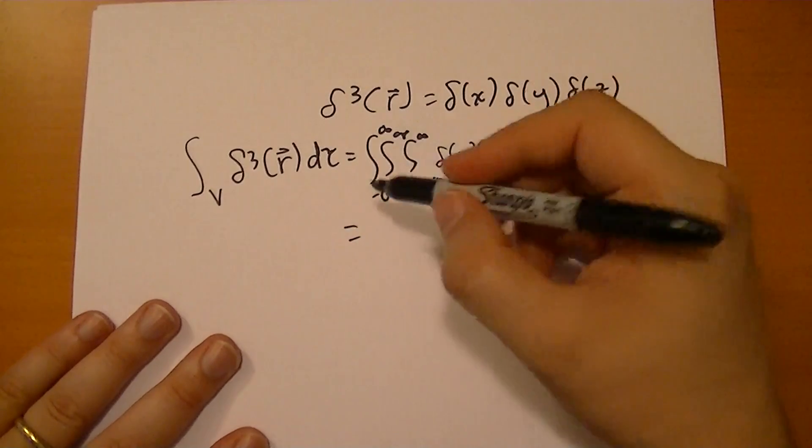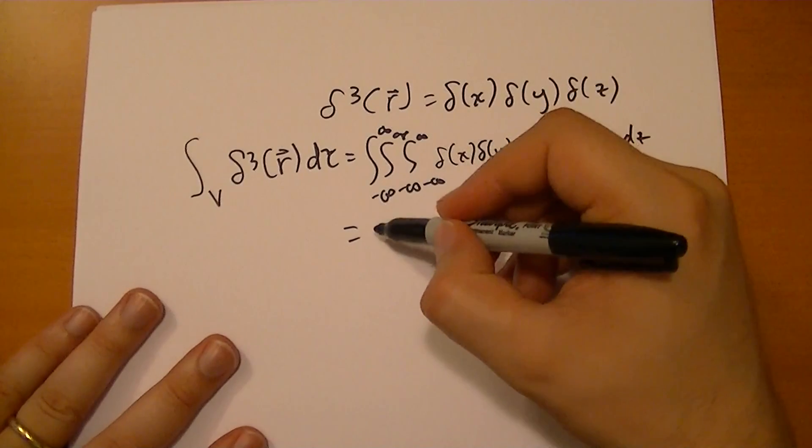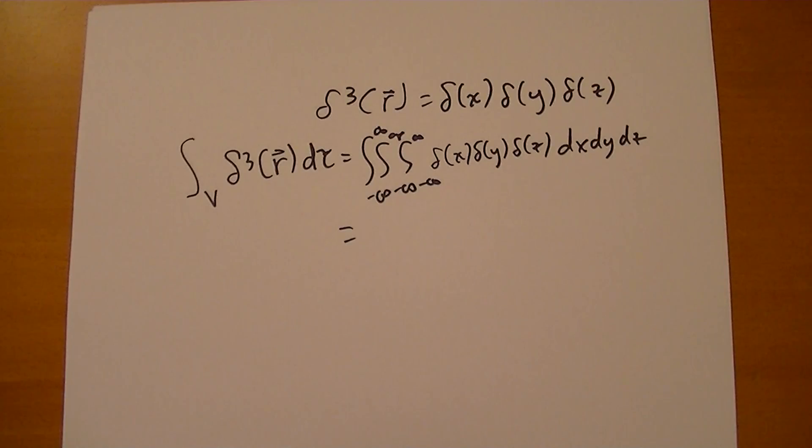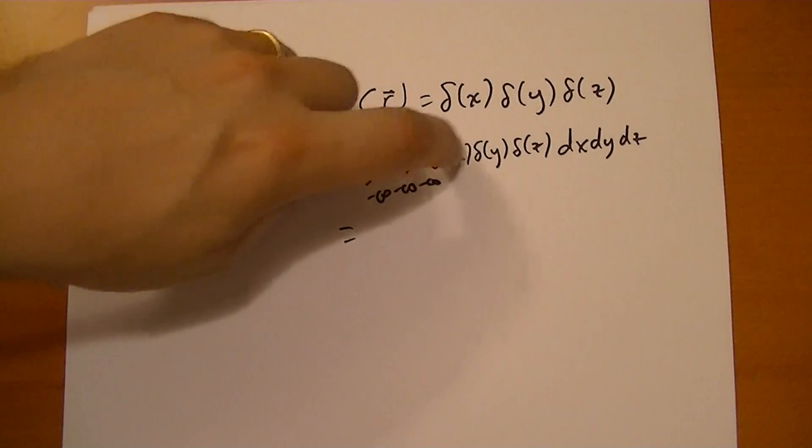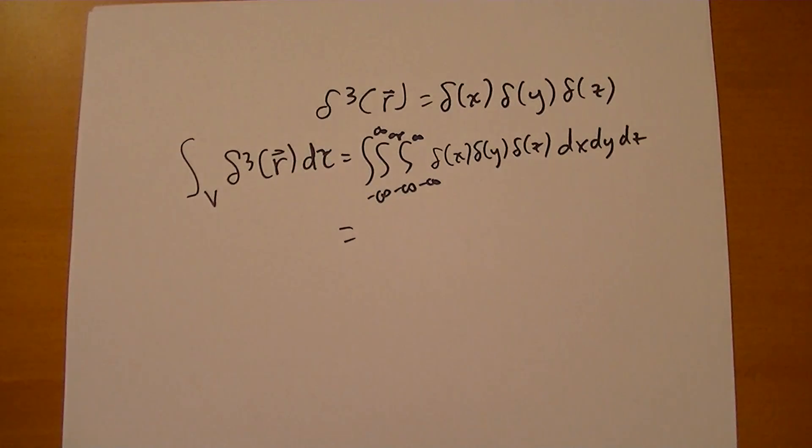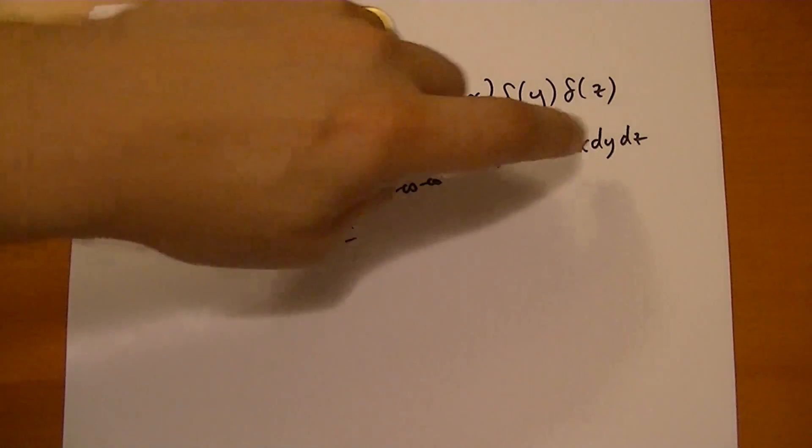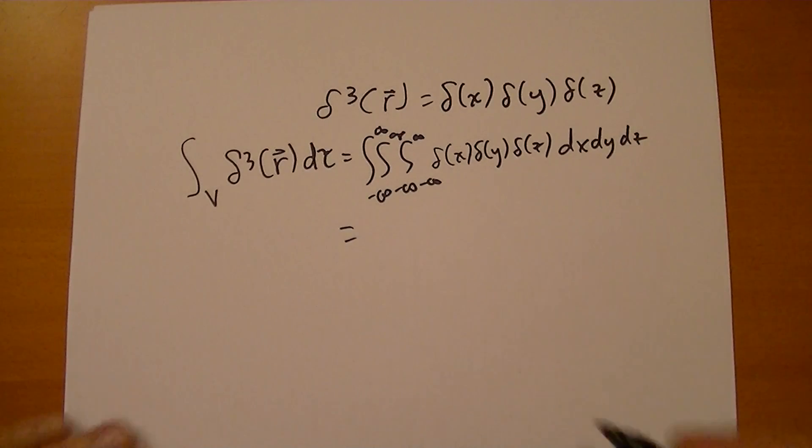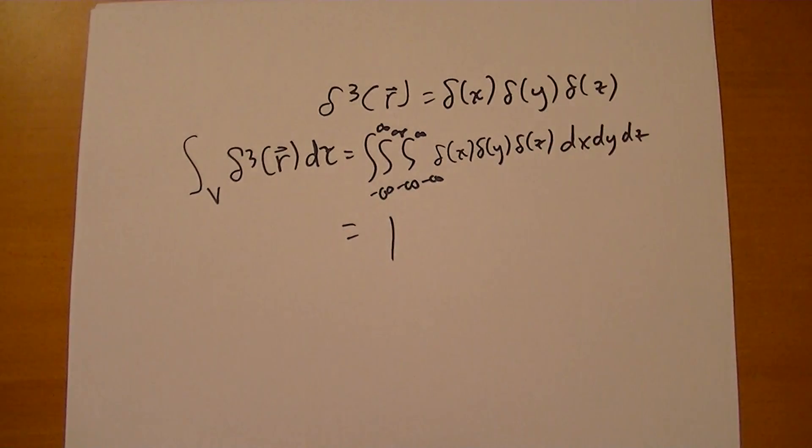And separating it all out, you can see how you can separate the terms out. The end result is that at that one point, you're going to have the integral δ(x)dx, and the integral δ(y)dy, and the integral δ(z)dz, and 1 times 1 times 1 is all equal to 1. So if you include the origin in this triple integral, you're going to get the value of 1.